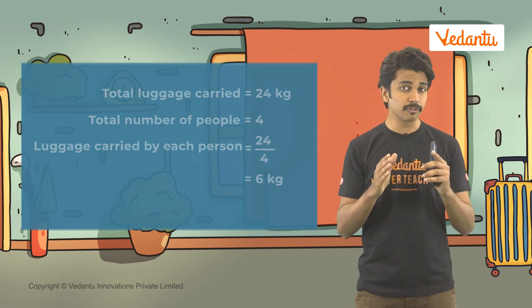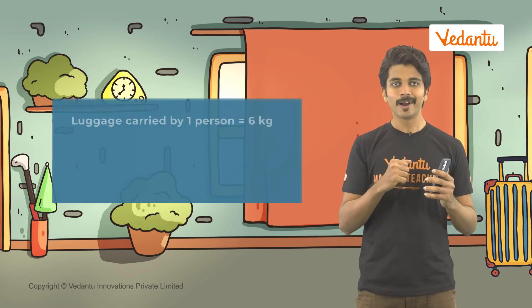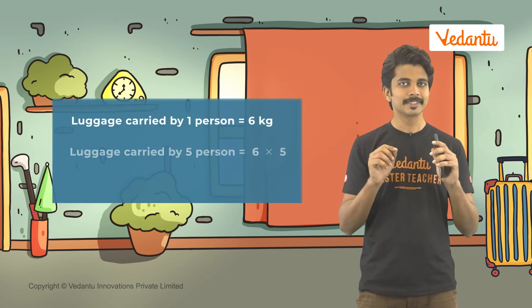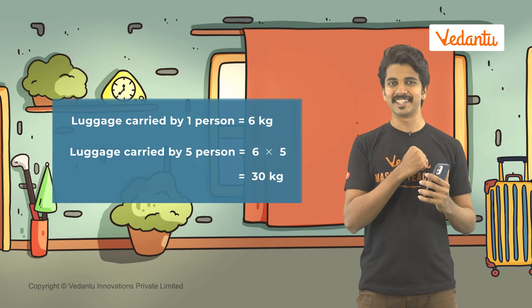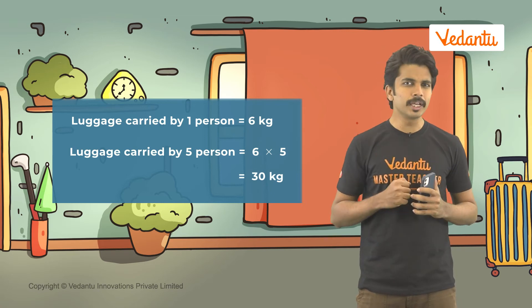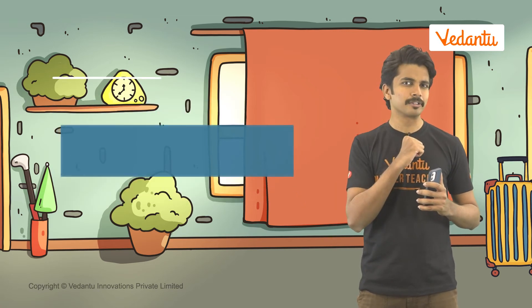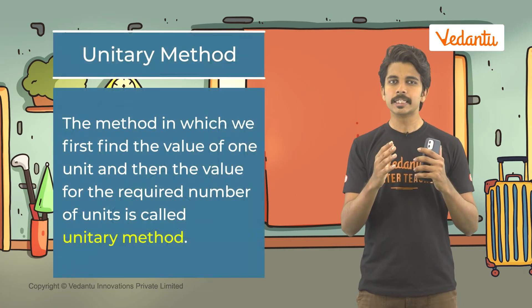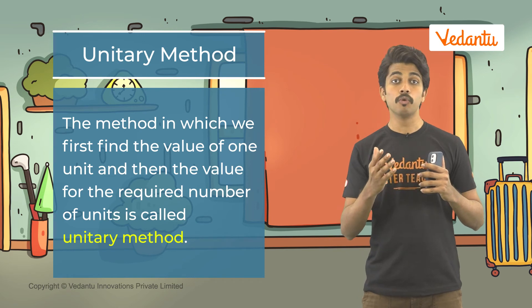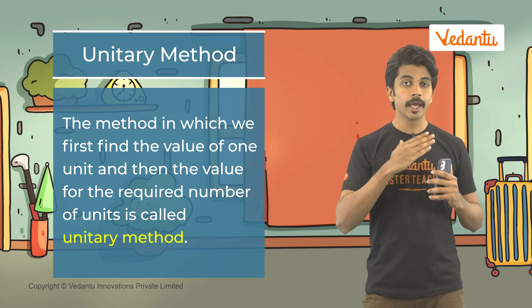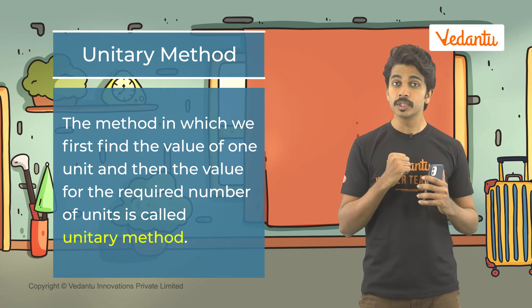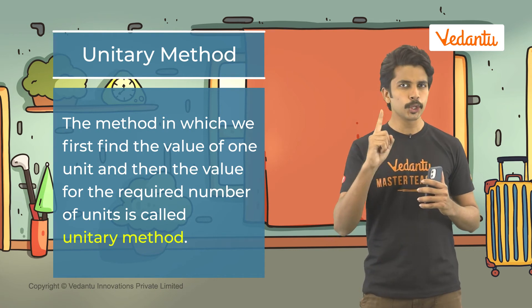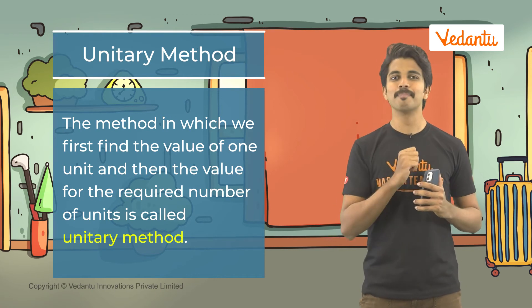We can now use this information to find the luggage needed for 5 people. We can multiply 6 with 5 and we have 30 kg. We can plan for around 30 kg of luggage. This method in which we first find the value of one unit and then the value for the required number of units is known as the Unitary Method.